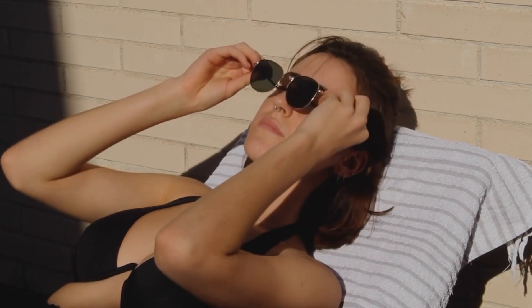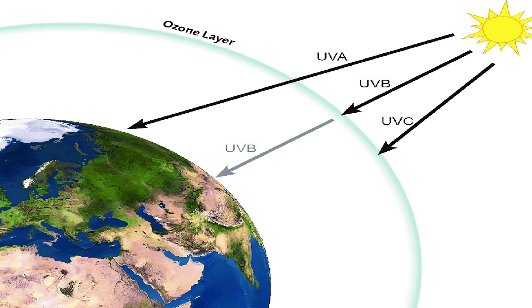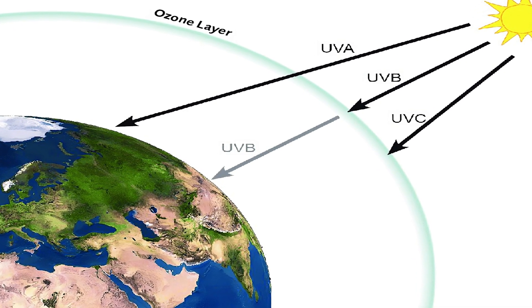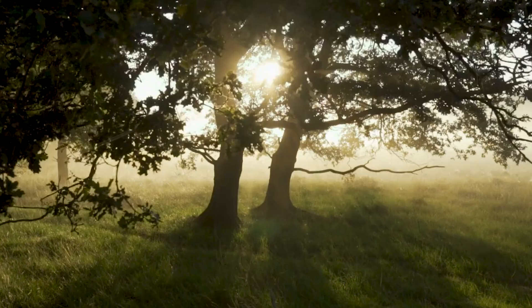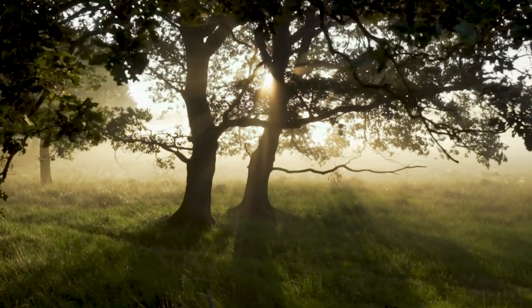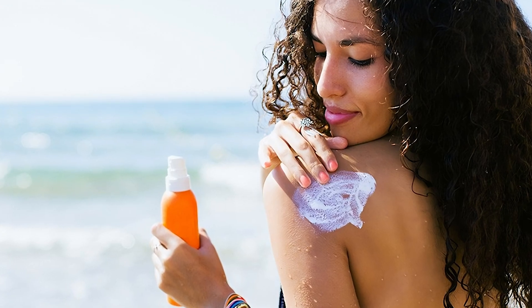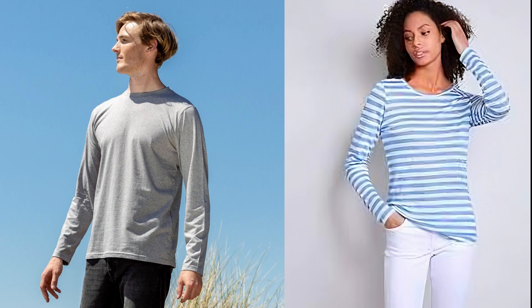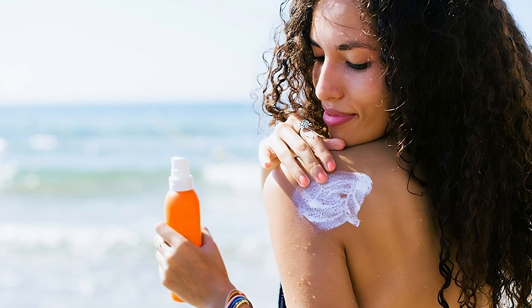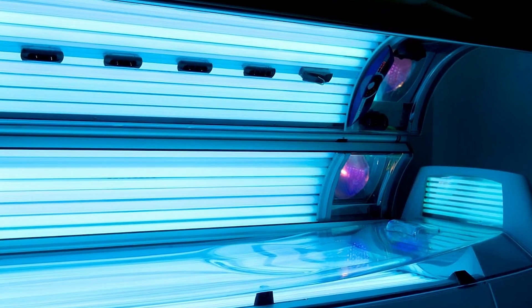However, sunlight can also be harmful to the skin, particularly with excessive unprotected exposure. Sunlight contains ultraviolet (UV) rays, which can damage DNA and skin cells, leading to skin cancer. Prolonged exposure can also cause sunburn, premature aging, and other skin damage. Experts recommend getting some sunlight each day, particularly in the morning, to help regulate the sleep-wake cycle and boost mood. However, it's important to protect your skin when spending time outside, particularly during peak sunlight hours between 10 a.m. and 4 p.m., by wearing protective clothing and using sunscreen with a high SPF. It's also important to avoid tanning beds, which can expose the skin to harmful UV rays.